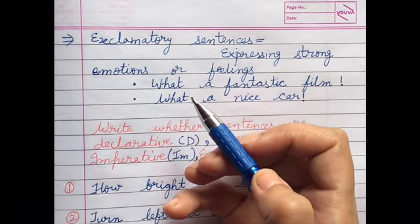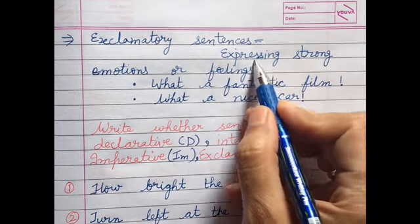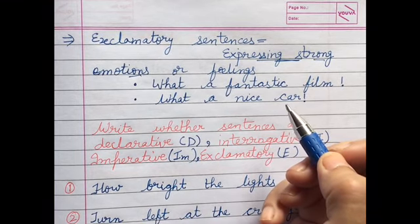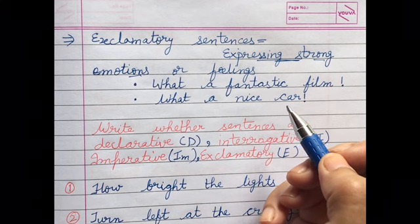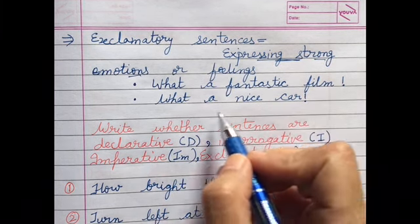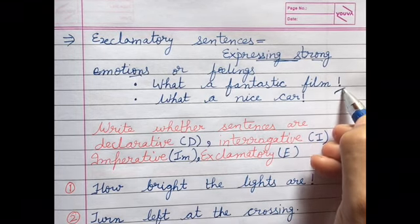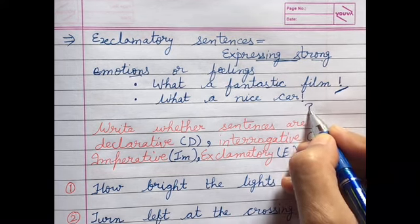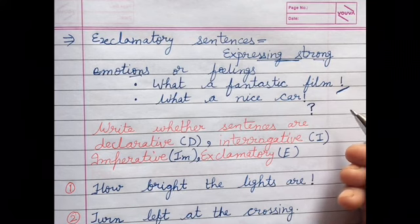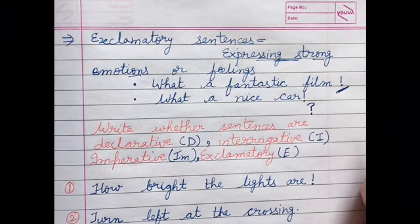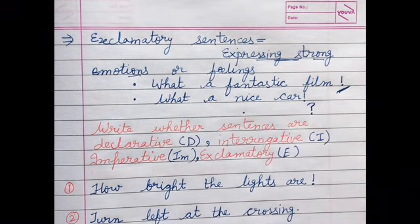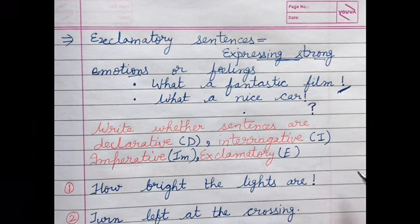The next type is exclamatory sentences. You may have already learned this in your previous classes — in these we express a strong feeling. For example: 'Wow! What a match!', 'Oh! I have lost the match.', 'What a fantastic film!', 'What a nice car!' In exclamatory sentences we use the exclamation mark, in interrogative we use the question mark, and in declarative and imperative sentences we use a full stop. These are the punctuation marks used in all these different sentence types.